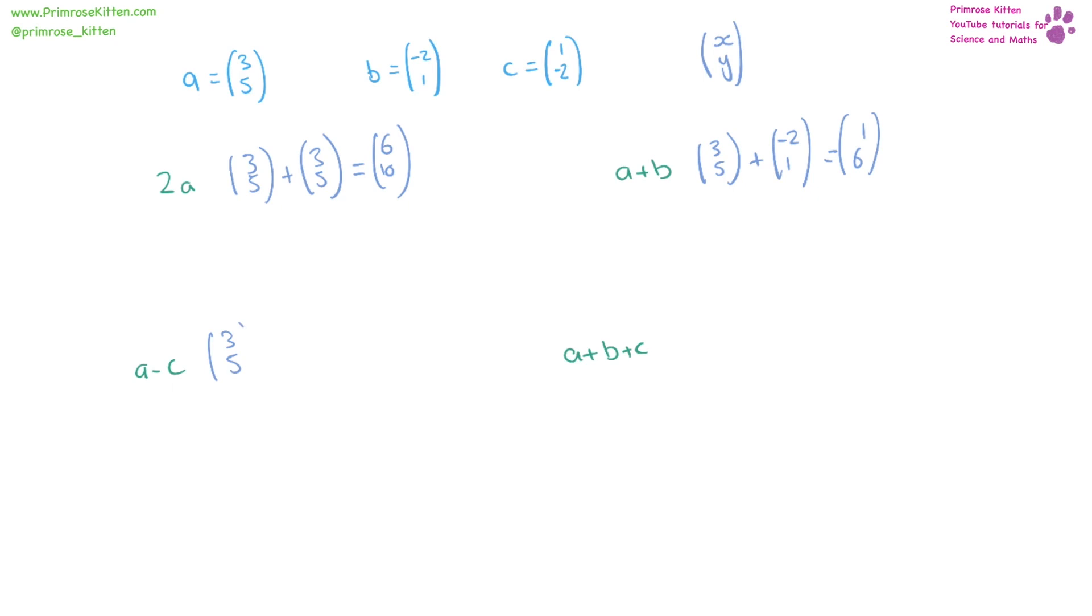a minus c, so we have (3, 5) minus (1, -2). 3 minus 1 is 2. 5 minus minus 2 is 7.